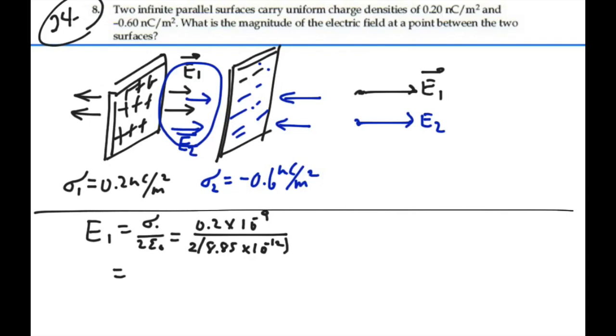That's going to give me an electric field, 0.2 times 10 to the minus 9, divided by 2, divided by 8.85, times 10 to the minus 12, 11.3 newtons per coulomb. And as I've drawn it between these two sheets, that is to the right.